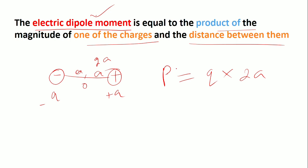Please note this carefully because we will use this dipole moment in future derivations. The dipole moment is just the product of one of the charges and the distance between the charges.